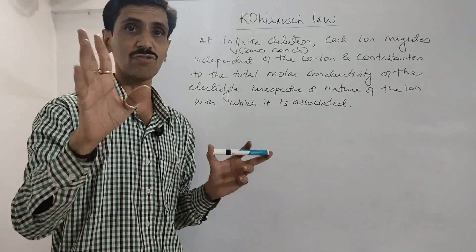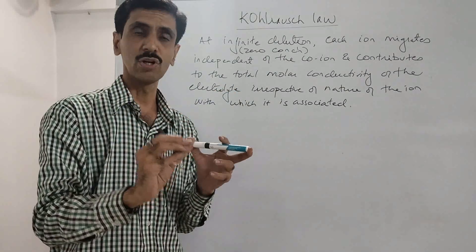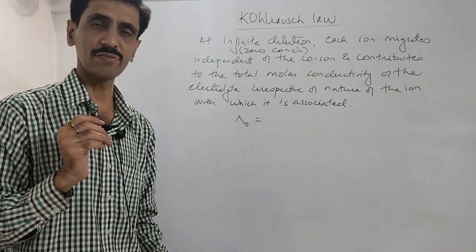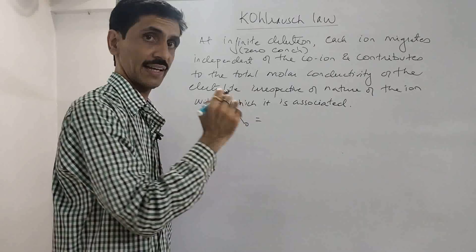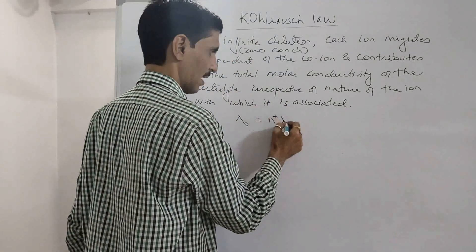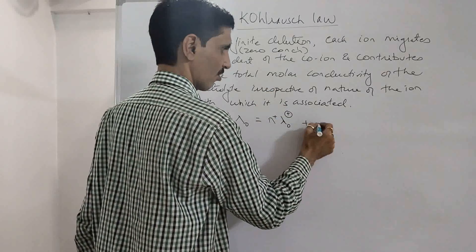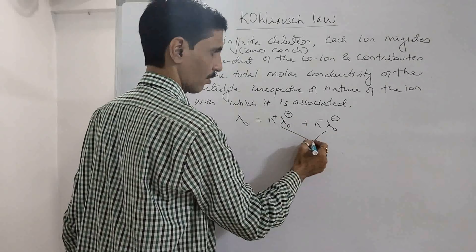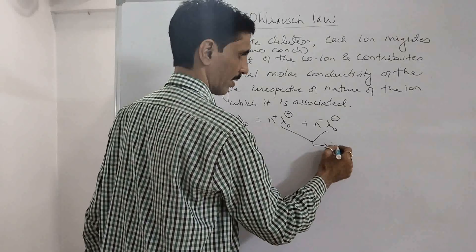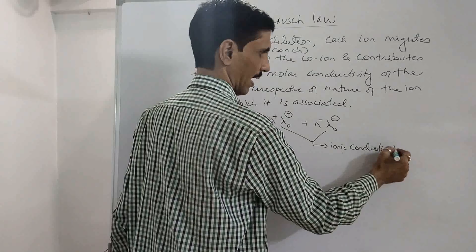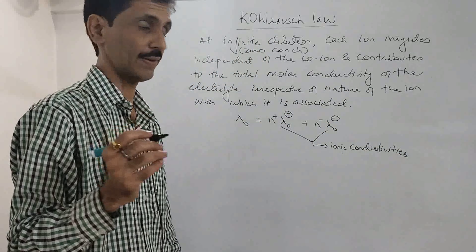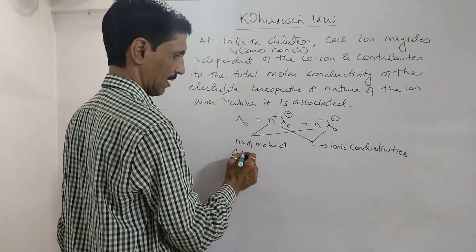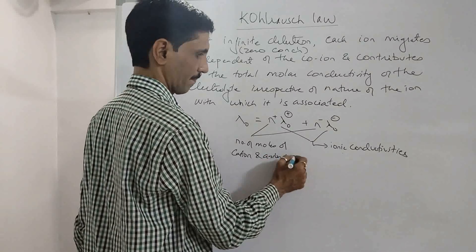At zero concentration, the migration of the ion does not depend upon the nature of the ion with which it is associated, and every ion contributes towards the total molar conductivity. The mathematical expression based on this law is: λ°(electrolyte) = n⁺λ°₊ + n⁻λ°₋, where λ°₊ and λ°₋ are the molar conductivities of the cation and anion respectively, and n⁺ and n⁻ are the number of moles of the cation and anion respectively.